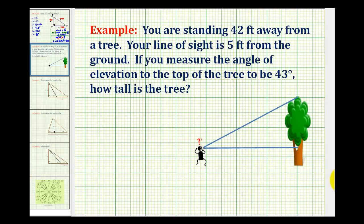Here's an application of a trig equation. You are standing 42 feet away from a tree. Your line of sight is five feet from the ground. If you measure the angle of elevation to the top of the tree to be 43 degrees, how tall is the tree?